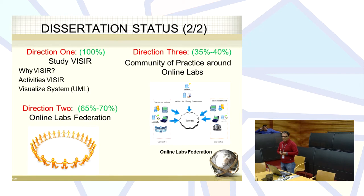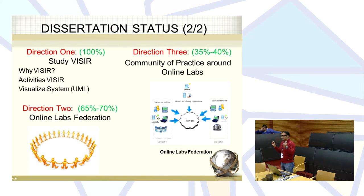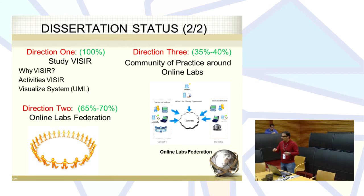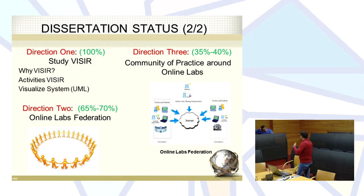We still have one part waiting, which is why the second direction is at about 65-70%. Direction three is the community of practice around online labs. This experiment will be shared between two universities from the MENA region. We are running experiments for MENA researchers, students, and universities, and trying to share these experiments among them. This direction is about 35 to 40% done but needs more work.